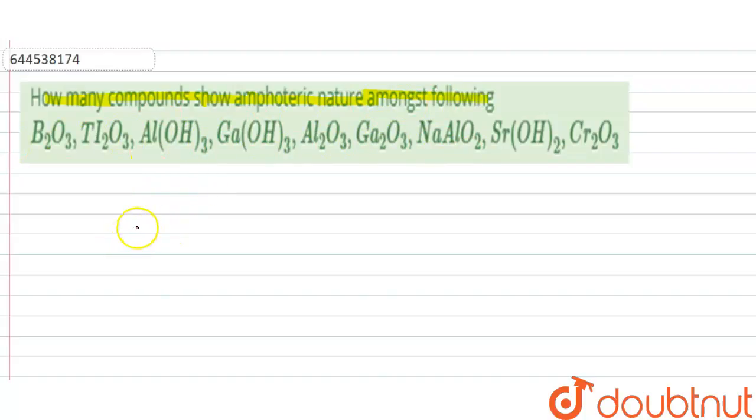So as here we have to tell about the amphoteric nature. Amphoteric nature means these are the compounds which show acidic as well as basic character. Now as here we have to tell about the compounds.